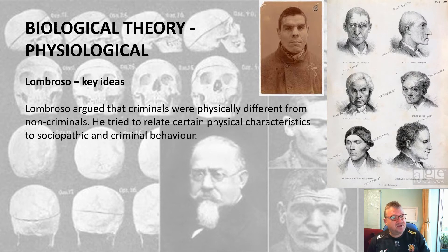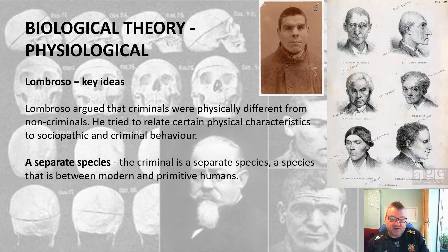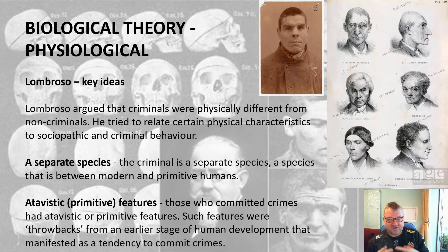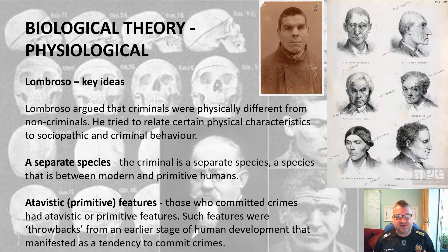Lombroso argued that criminals were physically different from non-criminals and tried to relate certain physical characteristics to sociopathic and criminal behavior. He regarded the criminal as basically a separate species, somewhere between modern and primitive human beings. Those who commit crimes have atavistic, primitive features — throwbacks from an earlier stage of human development — and this manifests in their tendency to commit crimes.